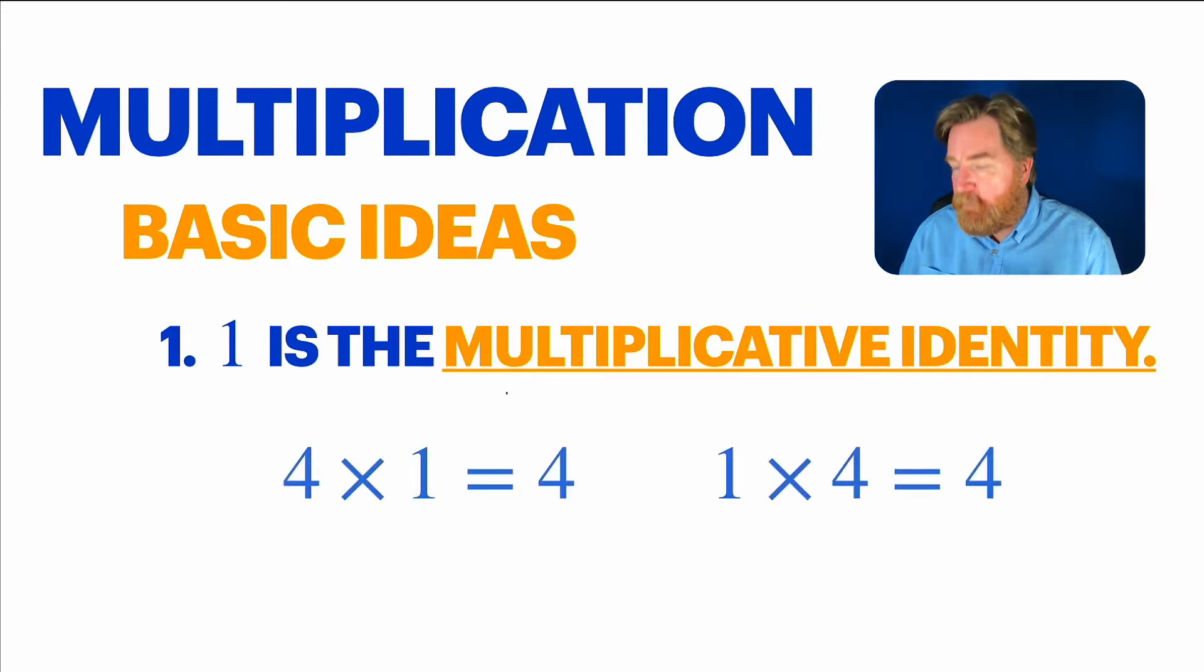One is the multiplicative identity, which just means when you multiply a number by one, you just get that number. One preserves its identity when you multiply it. So four times one is four, and one times four is also four.